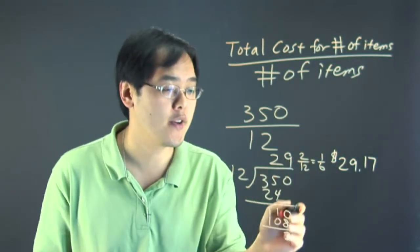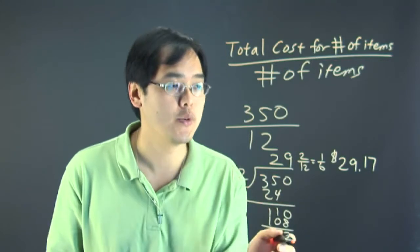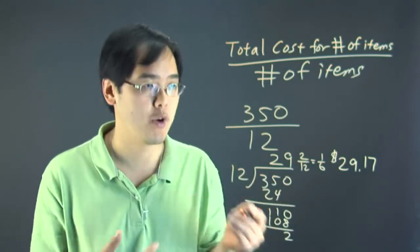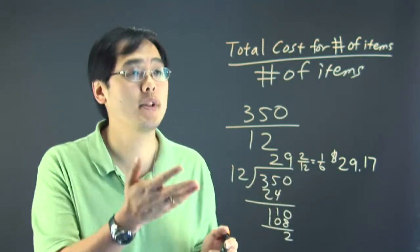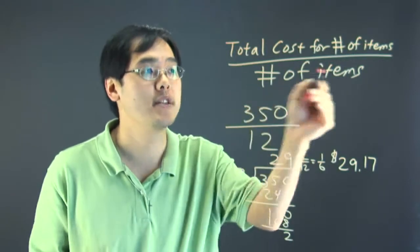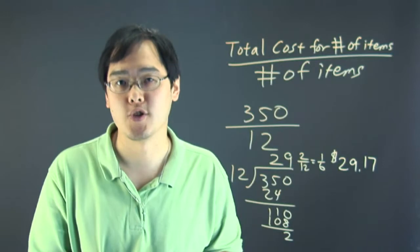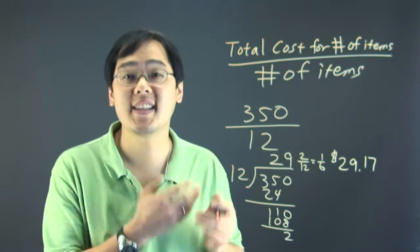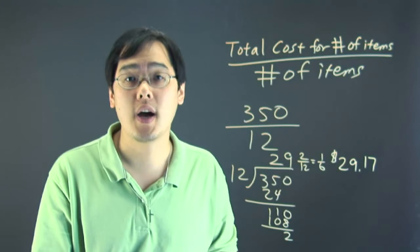Now you can find this out another way by just adding zeros and continuing the division, but there's a couple of ways to go about finishing that. But the formula for average total cost is the total cost for the number of items divided by the total number of items that you purchased. So I'm Jimmy Chang and that's the algebraic expression for total average cost.